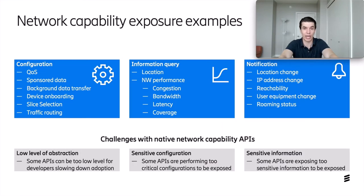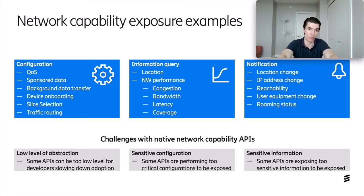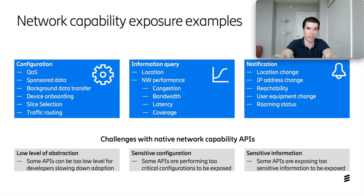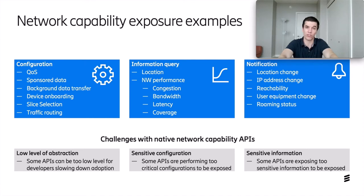We have three main categories of network exposure capabilities: network configuration APIs, network information query APIs, and notification APIs. For configuration: quality of service enables the developer to specify guaranteed bit rate or priority requirements. Sponsored data enables the developer to sponsor data sessions so the specific application does not affect the user's data plan. Background data transfer can optimize firmware upgrades on scale for IoT devices. Device onboarding enables IoT applications to seamlessly integrate with the network infrastructure. Slice selection API is the interface for network slicing. Traffic routing is a key capability for edge computing.